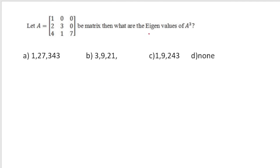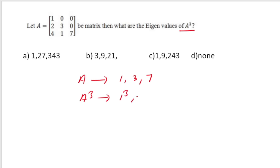Let A be a lower triangular matrix. What are the eigenvalues of A³? The eigenvalues of A are its diagonal elements: 1, 3 and 7. Eigenvalues of A³ are 1³, 3³ and 7³ = 1, 27 and 343. The correct option is A.